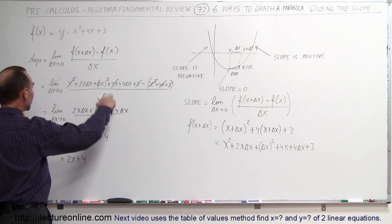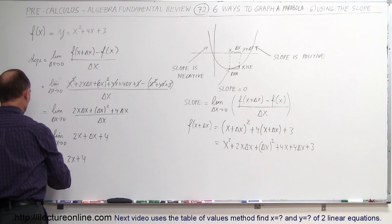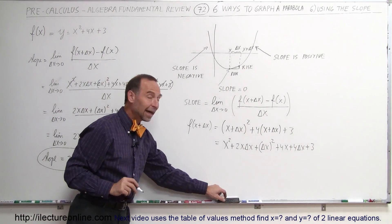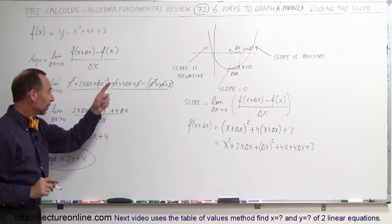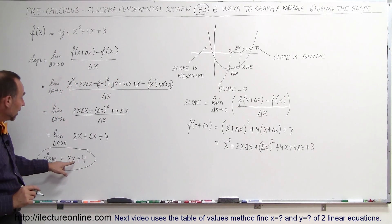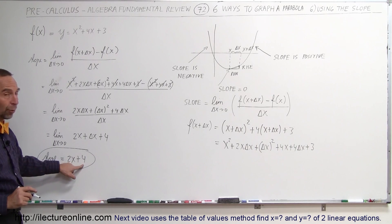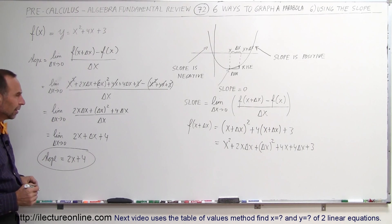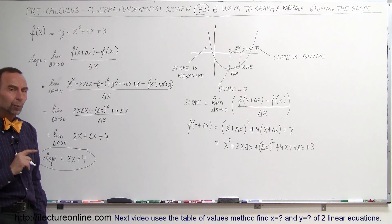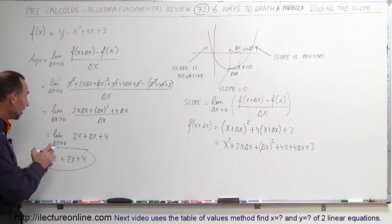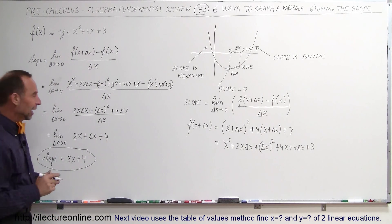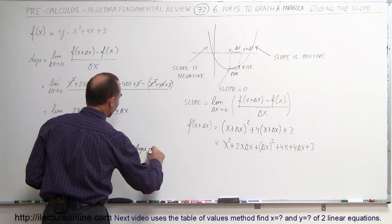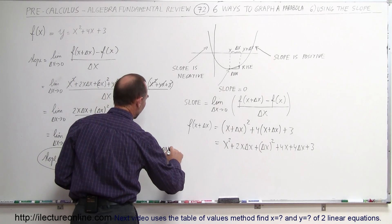This is the slope of the parabola, meaning I can find the slope for any value of x. When x equals 0, the slope is 4; when x equals 1, the slope is 6; when x equals 2, the slope is 8. But when is the slope equal to 0? To find that, I'm going to set the slope equal to 0 and solve for x.